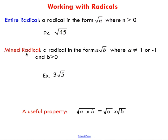A mixed radical is an expression involving a square root that looks like this, where you've got some number times the square root of another number. Your a value is not one — otherwise if the a value was one, you would have an entire radical — and your b value has to be greater than zero. You can't take the square root of a negative number. So this is what we call a mixed radical. As it turns out, this mixed radical is just another form of this entire radical.